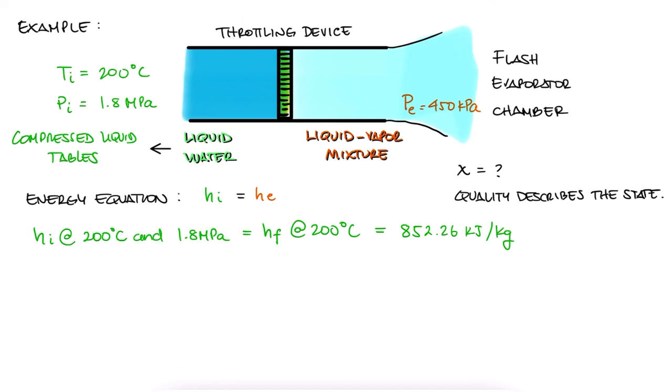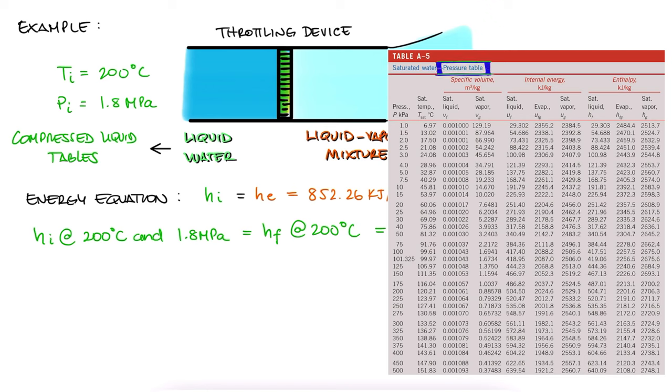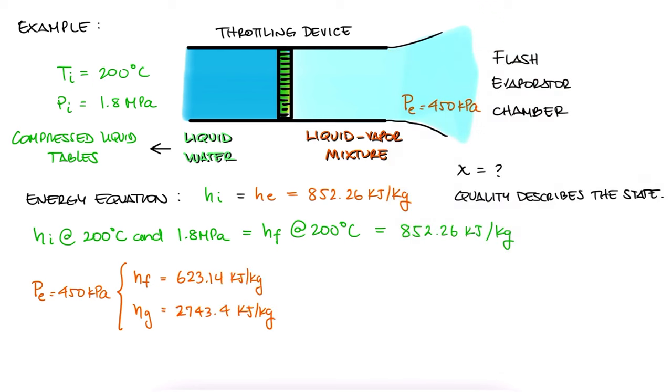And since this is a throttling device, where the inlet enthalpy is assumed to be the same as the exit enthalpy, He is also equal to Hi. At the exit, we know that our pressure is 450 kPa. And since we know we're looking for the quality, meaning that we know that our water is in a liquid vapor mix, we can go to our saturated water tables, this time the pressure version, and look up 450 kPa to write down the values for Hf and Hg. We're looking for these values because these are what we need to find the quality of our mixture.